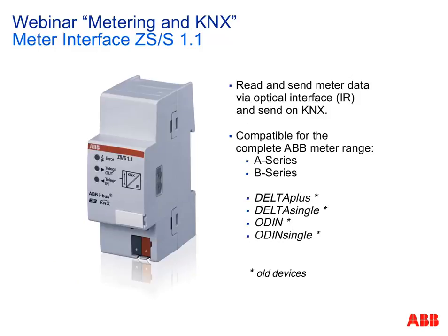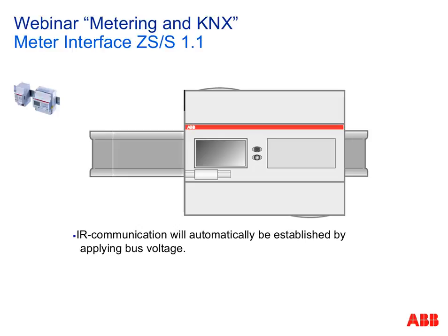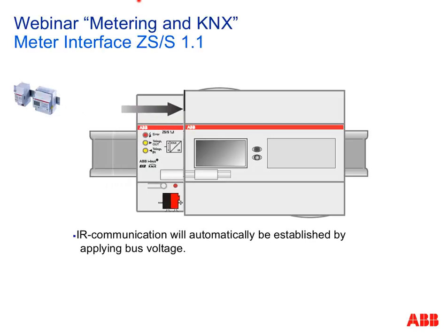Now let's look at the KNX meter interface ZSS. It's a small device with a KNX connection, some LEDs, and two infrared eyes on the right for IR communication. You install the meter on the DIN rail and place the KNX meter interface ZSS directly next to it, and they communicate via infrared. This works for current A and B series meters and also the former Delta and OD meters.